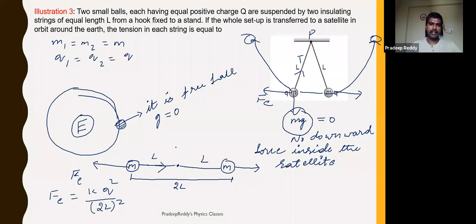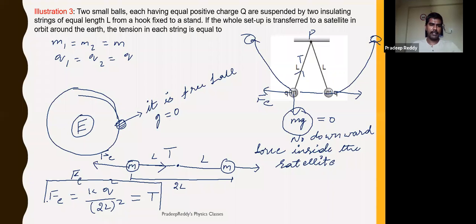This electrostatic force will be balanced by the tension acting in the opposite direction. The electrostatic force equals the tension. This is the final expression for the tension in the string when you place these two masses in the satellite.